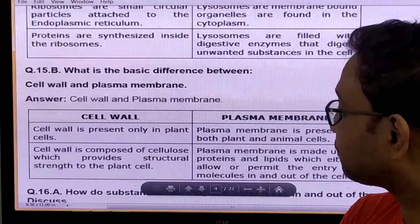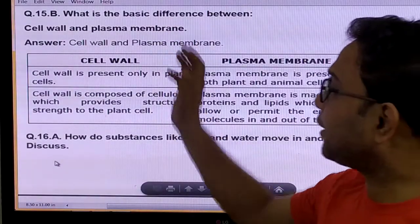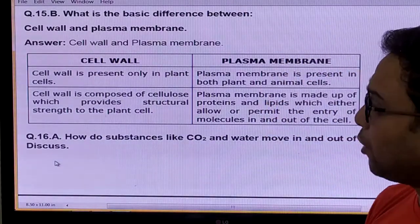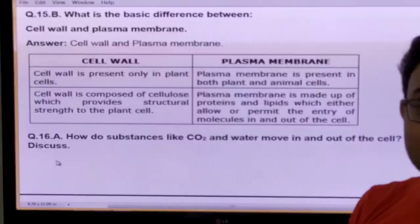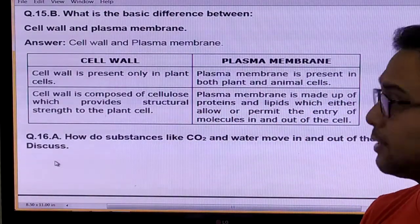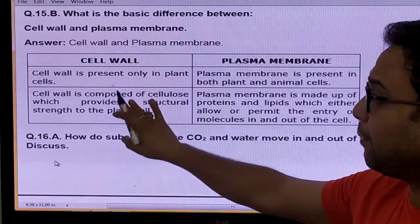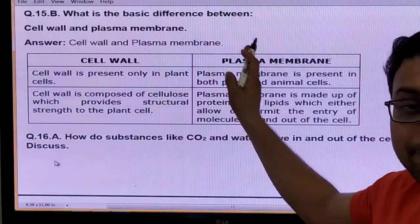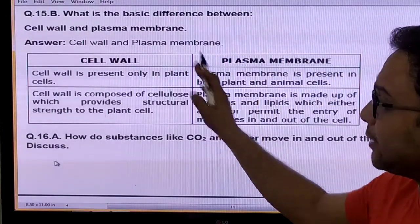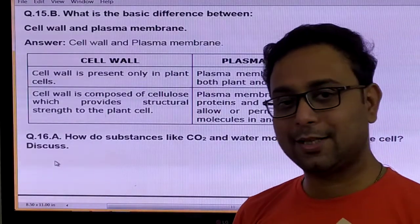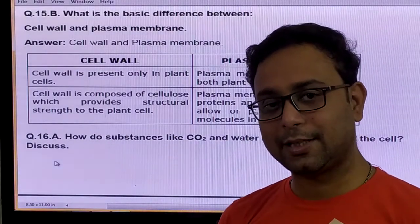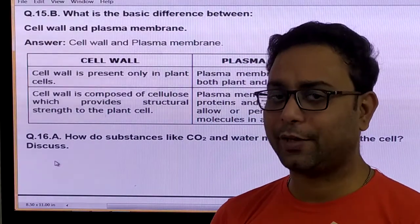Question: What is the difference between cell wall and plasma membrane? Cell wall is present in the plant cell; cell membrane is present in both plant and animal cells. Cell wall is ultimately made up of cellulose; plasma membrane is made up of phospholipids. The cell wall is permeable in nature; plasma membrane is selectively permeable in nature. Very important difference.